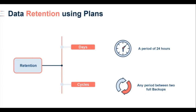Commvault defines a cycle as any period between two fulls. While Commvault plans don't display any form of configuration relating to cycles in Command Center, a control plane's retention is completely policed by the availability of cycles.